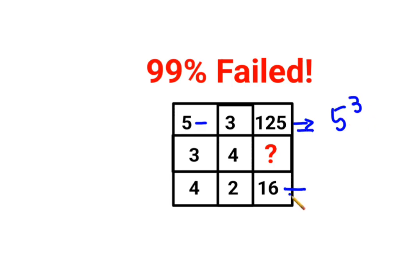Similarly, 16 can be written as what? 4 raised to 2. Now if you see, we already have the 4 and we already have the 2. Means the numbers in the middle column are becoming what? Your indices.